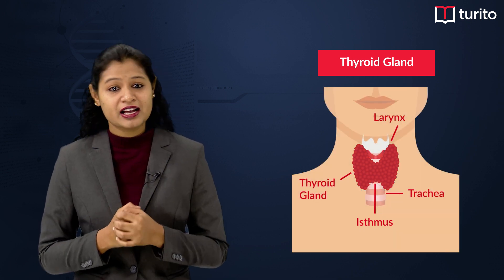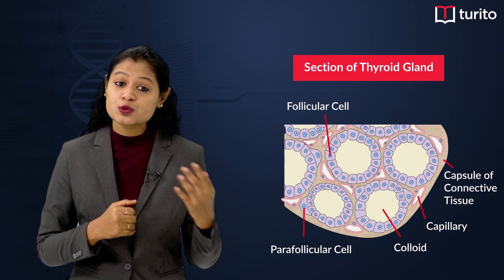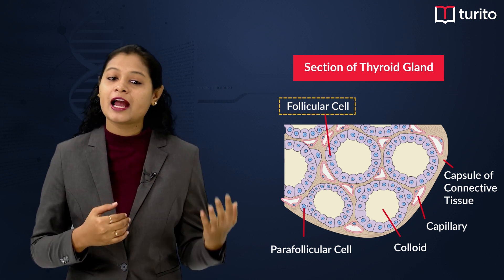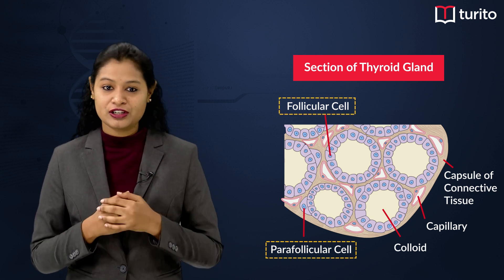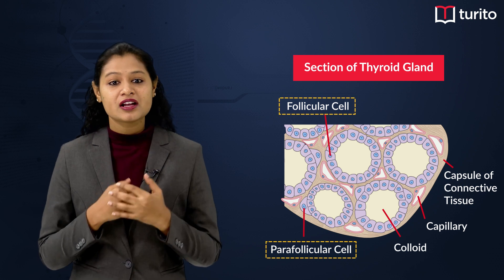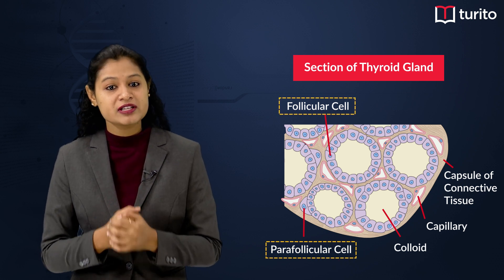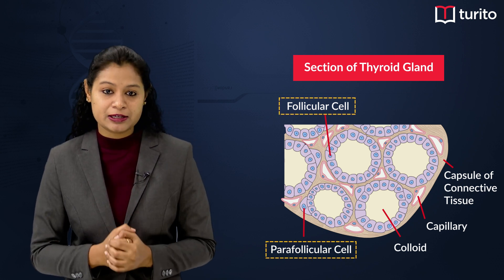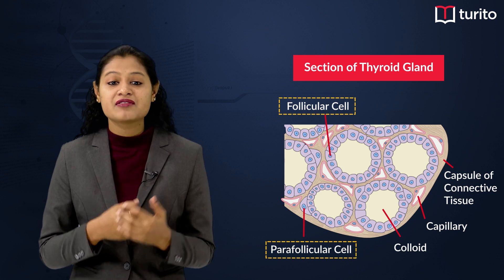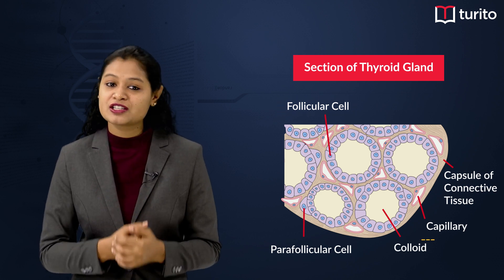Inside the thyroid gland, there are two types of cells: follicular cells and para-follicular cells. Follicular cells are lined by cuboidal epithelium, and in the center they have a semi-fluid material called the colloid.